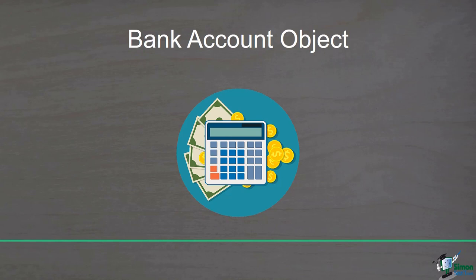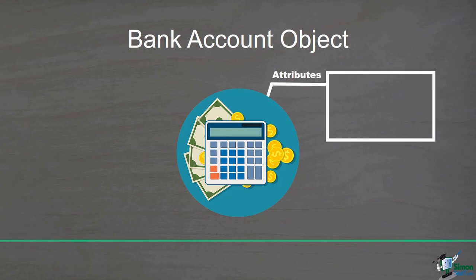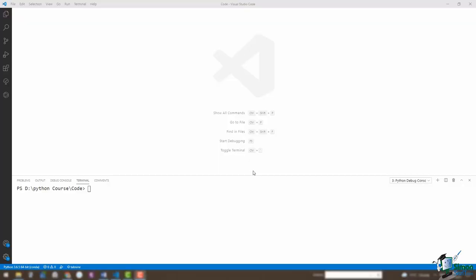What attributes does a bank account have? At least you can think of its number, holder's name, and balance. So the bank account has three attributes. It has more attributes in a real-world application, but here it's just an example. Let's jump into code and see how to create a bank account object in Python. Before creating the bank account object, I want to show you that you are already familiar with the concept of objects, methods, and attributes in Python — you have used them before.